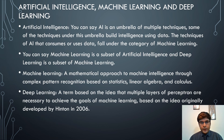Now we cover artificial intelligence, machine learning, and deep learning, and their basic differences. Artificial intelligence is an umbrella of multiple techniques. Some of the techniques under this umbrella build intelligence using data. The techniques of AI that consume or use data fall under the category of machine learning.